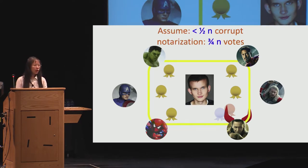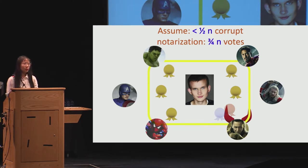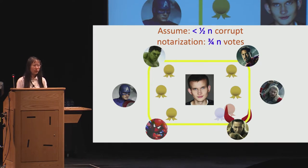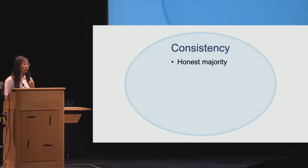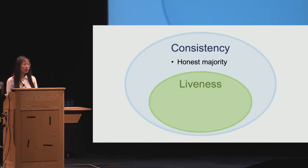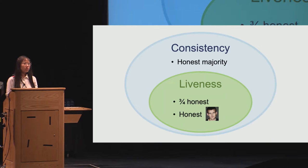How many votes are enough to confirm a transaction? If we assume less than half of voters are corrupt, we need to collect at least three-quarters of votes to confirm a transaction. The consistency proof is a simple pigeonhole principle argument and relies only on honest majority assumption. However, because we need to wait for three-quarters of votes, honest majority alone is not enough for liveness. If more than one-quarter of nodes are corrupt, or if the proposer is corrupt and keeps silent, the protocol can stop.